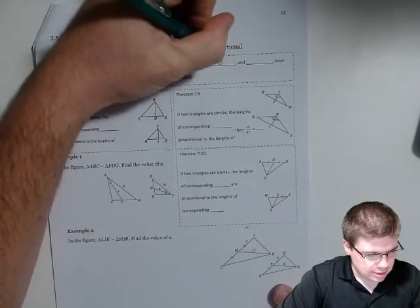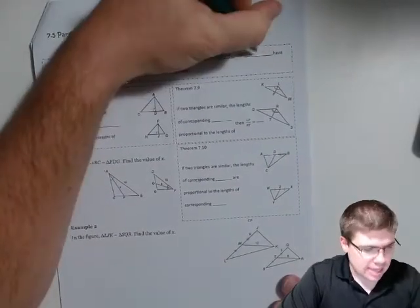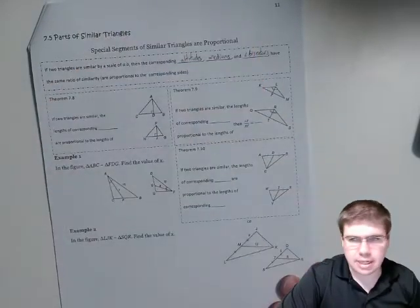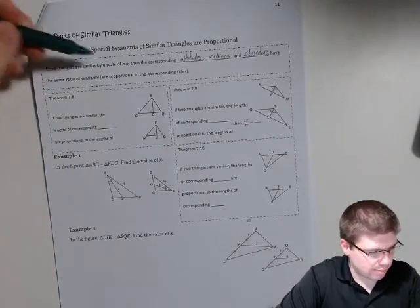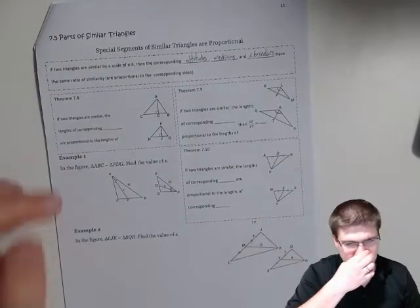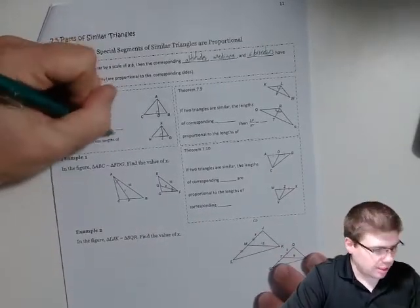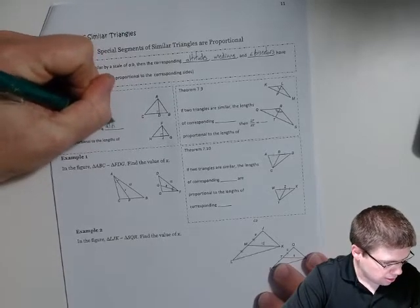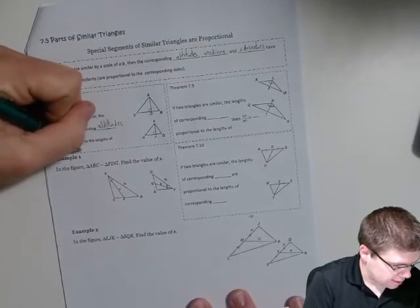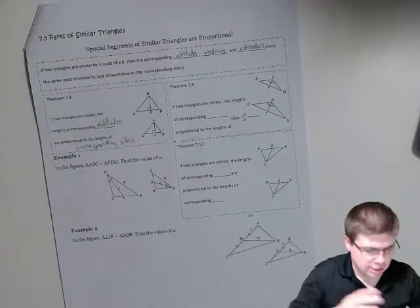The medians - that's if we go to like halfway along the side - and angle bisectors also have the same ratio of similarity, and those are proportional to those corresponding sides. So all the segments, and there are probably other ones we could come up with, but those are some of our interesting ones. Whatever that ratio is, whatever that scale factor is, they're gonna match.